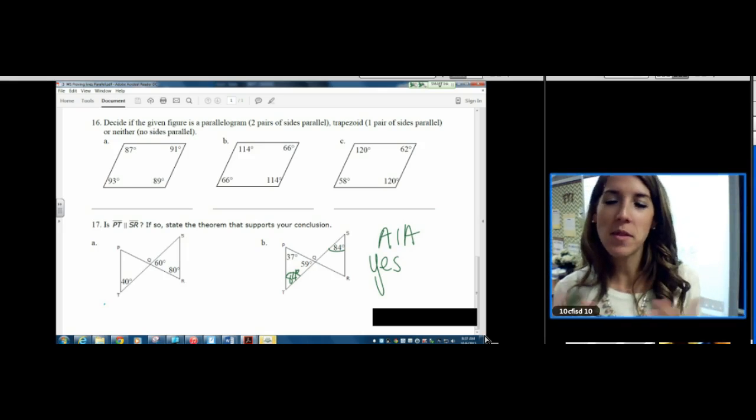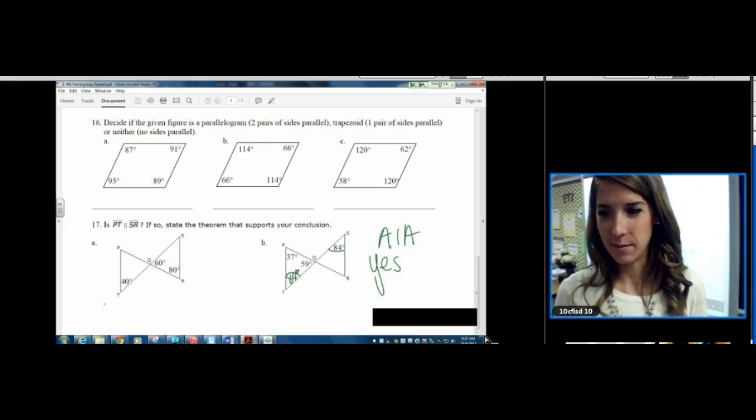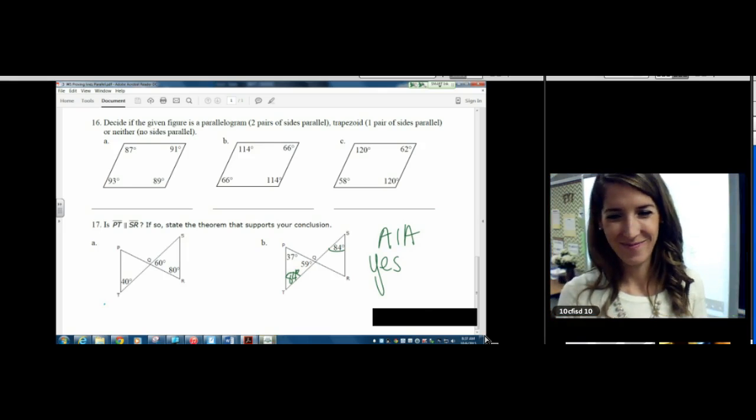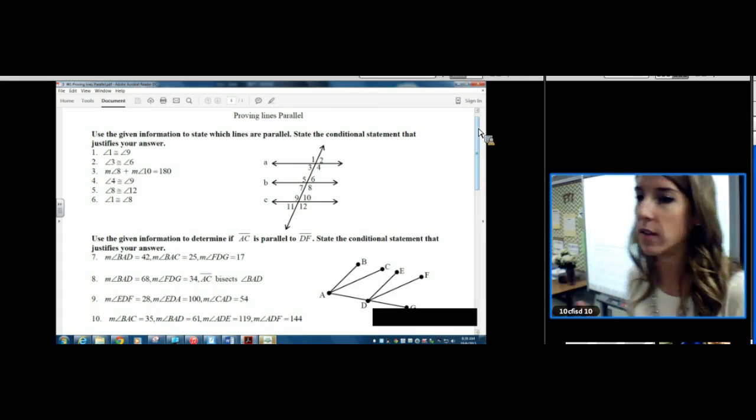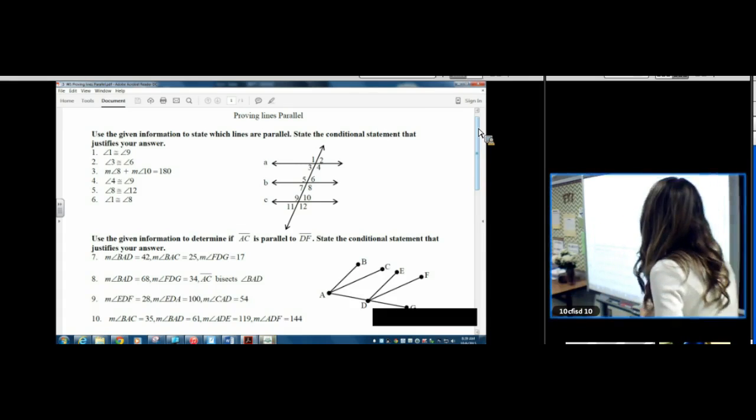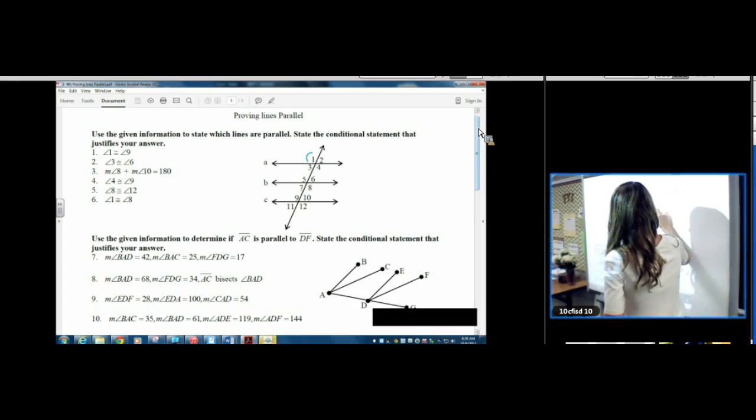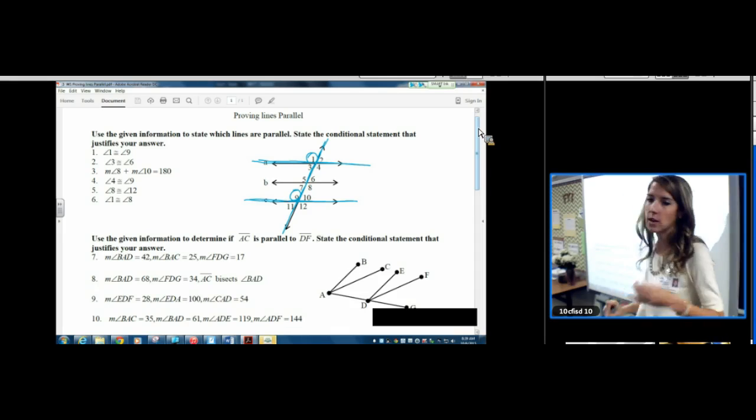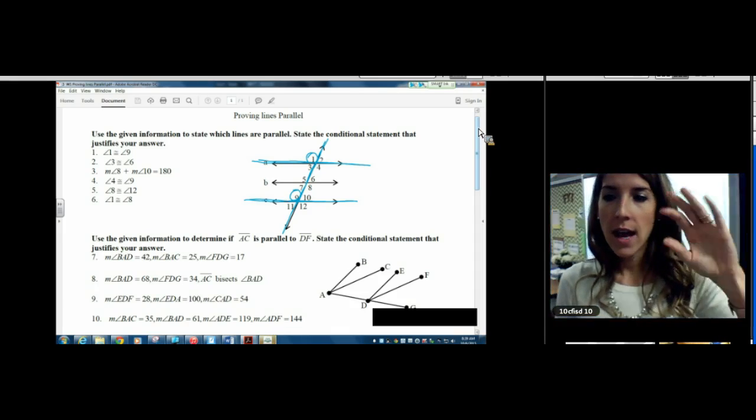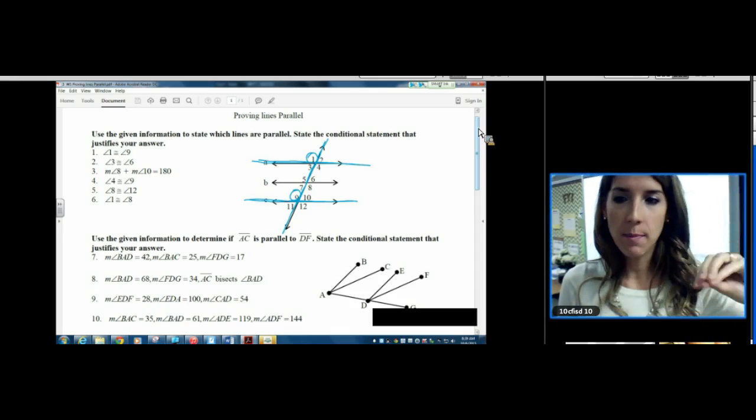You're using vertical angles, but remember those can't prove parallelism. Number one. Use the information to state which lines are parallel. So if we look at angle one and angle nine, focus on only the lines that are needed to create those angles.